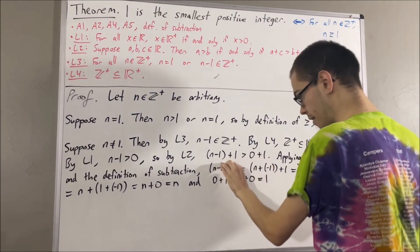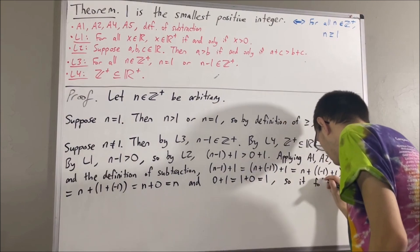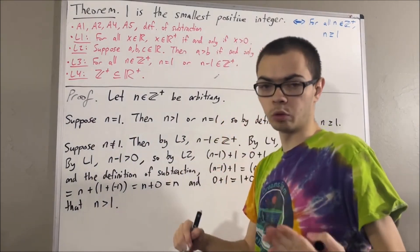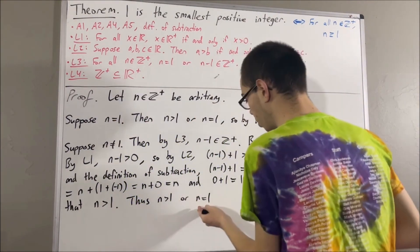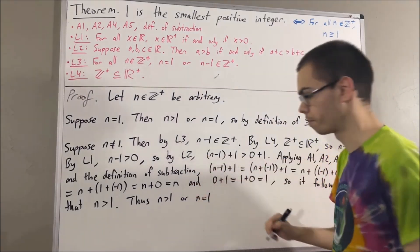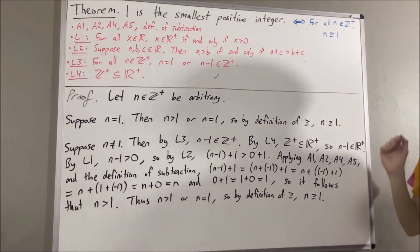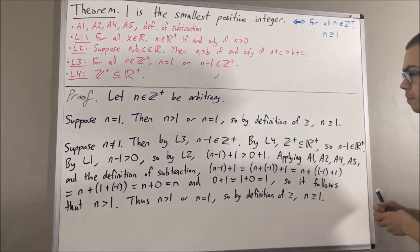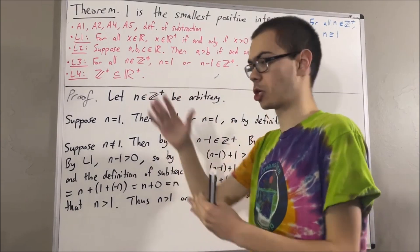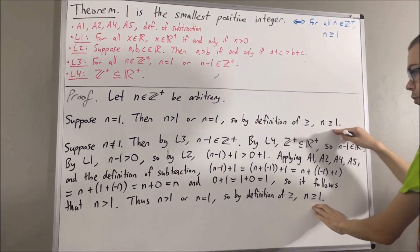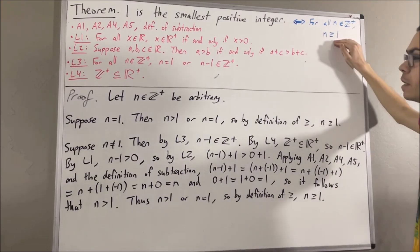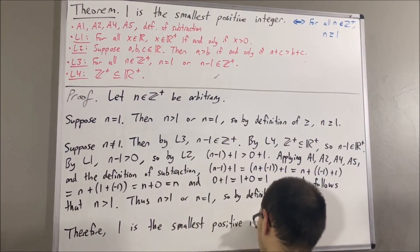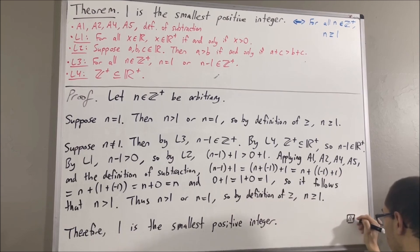This tells us that n is greater than one. And since n is greater than one, that means n is greater than one or n is equal to one, which is precisely what it means by definition for n to be greater than or equal to one — exactly what we wanted to show. In either case, n is greater than or equal to one. So for any positive integer n, it follows that n is greater than or equal to one. We have proven exactly what we wanted to prove, and this proves that one is the smallest positive integer. This completes the proof.